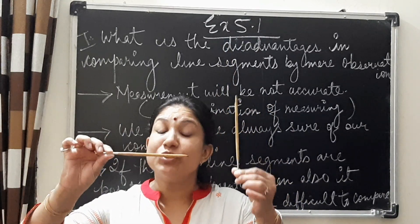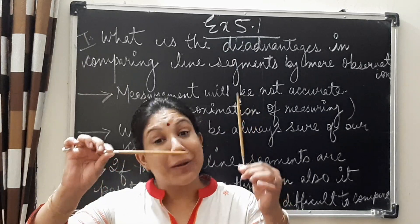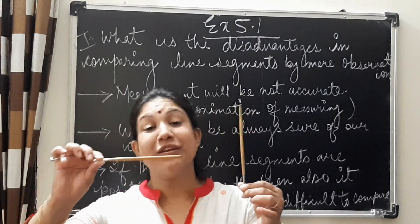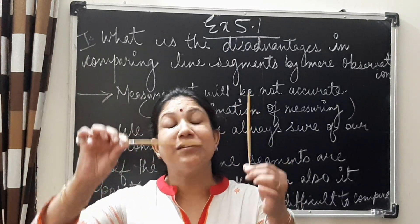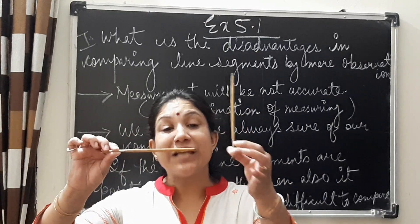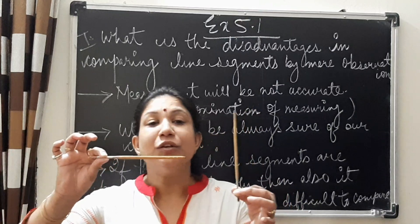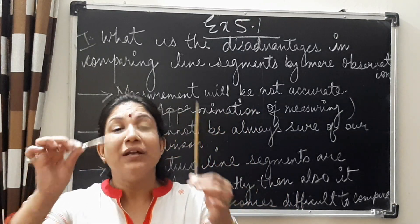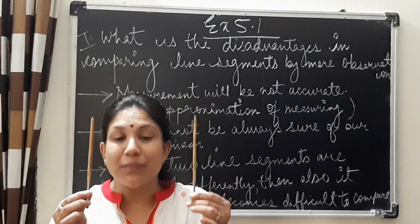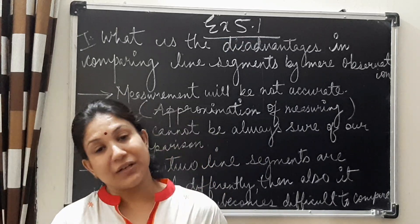Now it becomes quite difficult to compare the two line segments when their orientation is different. One is standing line and the other is sleeping line. So difficult to compare it in our mind. Like this, still we can compare. So this is the third disadvantage.